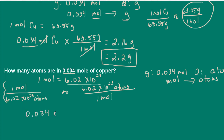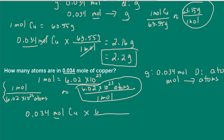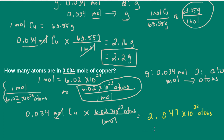So 0.034 moles of copper — should we use conversion factor one or conversion factor two? We need to cancel out moles, so I'm going to use conversion factor two: 6.02 times 10 to the 23 atoms per mole. Moles cancel. If you had used conversion factor one, you would have ended up with moles over atoms and there would be no cancellation. My answer is 2.047 times 10 to the 22 atoms. Taking significant figures into account — I can only have two — so this is 2.0 times 10 to the 22 atoms.